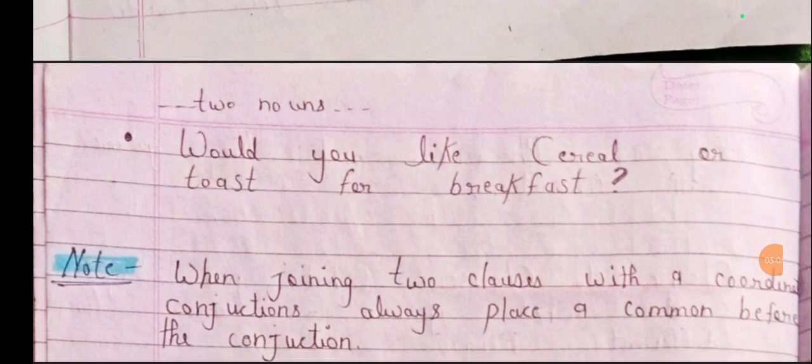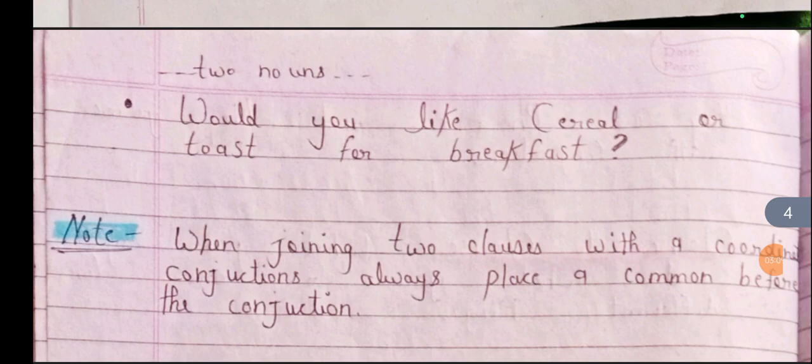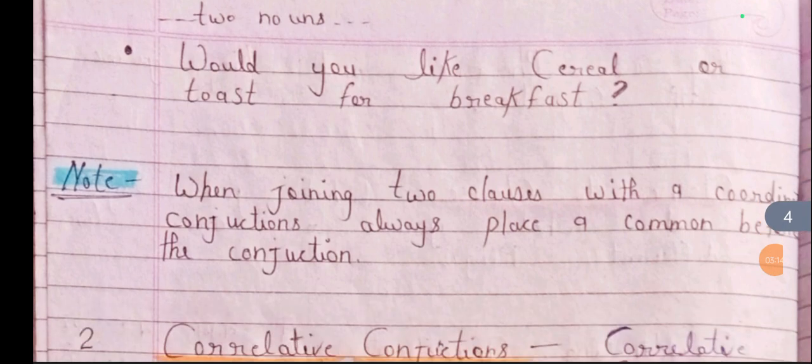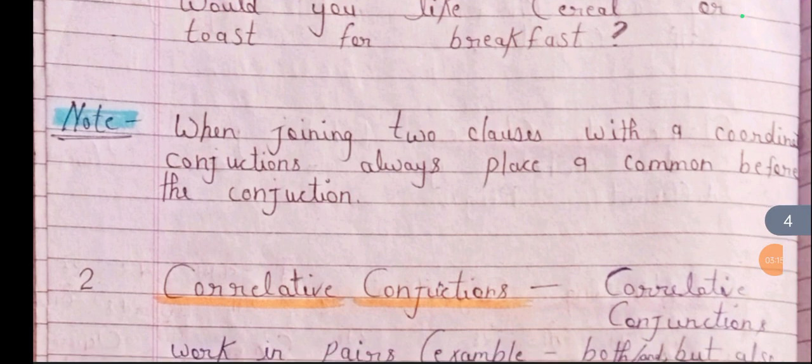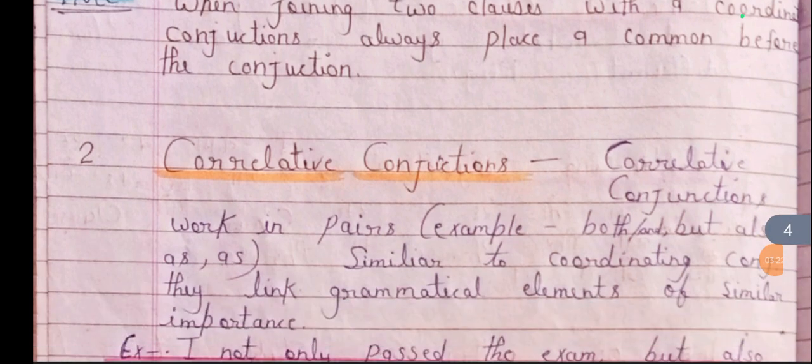'Would you like cereal or toast for breakfast?' Here, 'cereal' and 'toast' are both nouns joined by a coordinating conjunction. Note: when joining two clauses with a coordinating conjunction, you should always place a comma before the conjunction.